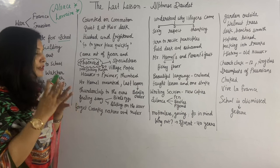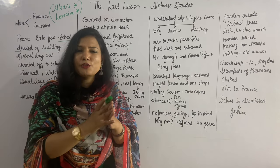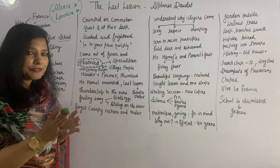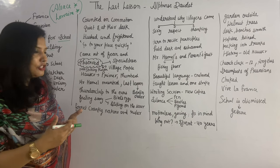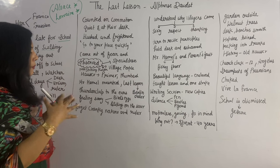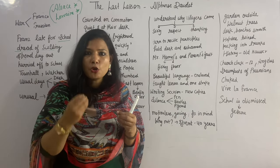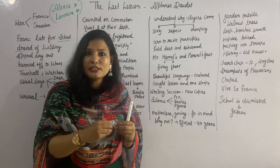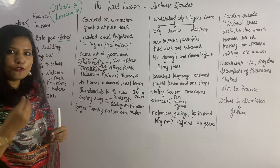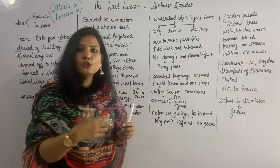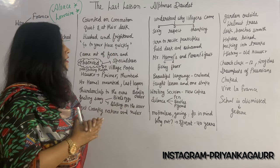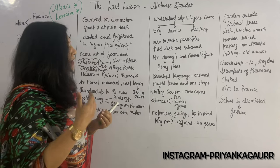Franz was feeling sorry and regretful — regretting that he had not paid attention earlier to French lessons. He felt sorry that instead of learning French, he used to seek birds' eggs or slide on the River Saar nearby his house. Then the thought came to his mind that he would no longer see Mr. Hamel, which made him forget about Mr. Hamel's cranky behavior and even forget his fear of the terrible wide ruler that had always frightened him.